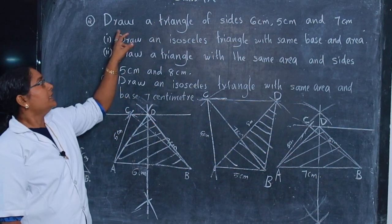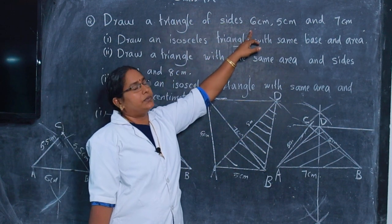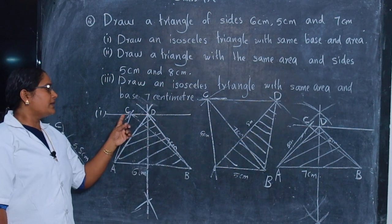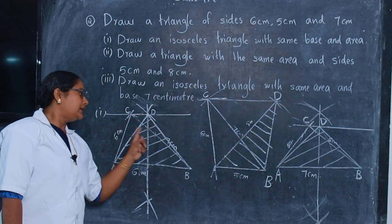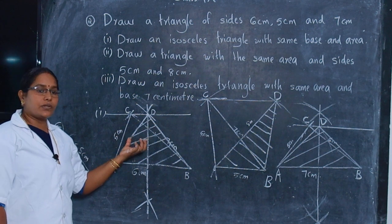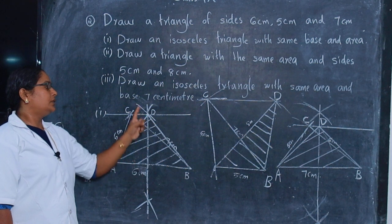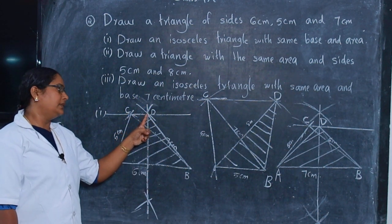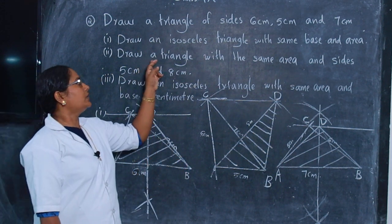To conclude this question: first, draw one triangle with sides 6 centimeter, 5 centimeter, and 7 centimeter. Then for the isosceles sub-question, draw the perpendicular bisector meeting the parallel line, and join the points to get the isosceles triangle.